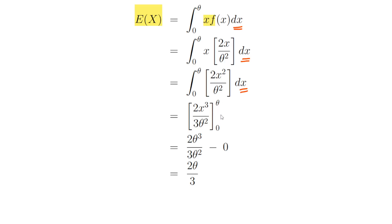We evaluate the expression at theta and at zero. We can disregard zero because it just goes to zero. So we get 2 theta cubed divided by 3 theta squared. The theta squared cancels out and we are left with 2 theta divided by 3. So the expected value of x is 2 theta divided by 3.